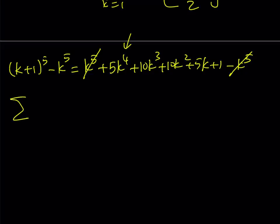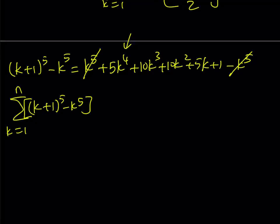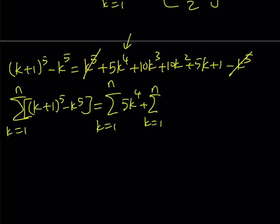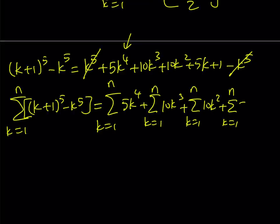Using sigma notation, we're going to be separating these into pieces. I have the sum from k equals 1 to n of k plus 1 to the fifth power minus k to the fifth power. Since both sides are equal, I can apply sigma to both sides and separate the terms: k equals 1 to n of 10k cubed, plus k equals 1 to n of 10k squared, plus k equals 1 to n of 5k, plus k equals 1 to n of 1. And of course, if you're adding 1 n times, you're going to get n from that last term.